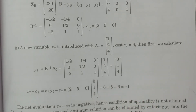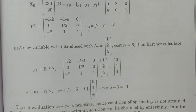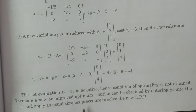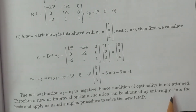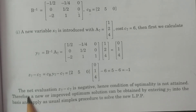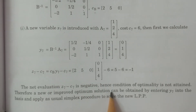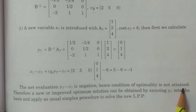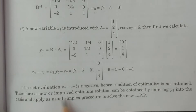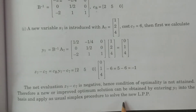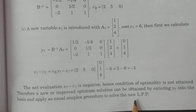If the net evaluation is positive, the optimum solution remains the same. If negative, we must apply the simplex procedure by entering y7 into the basis. Since z7 − c7 = −1 is negative, the condition of optimality is not attained. Therefore, an improved optimum solution can be obtained by entering y7 into the basis and applying the usual simplex procedure.